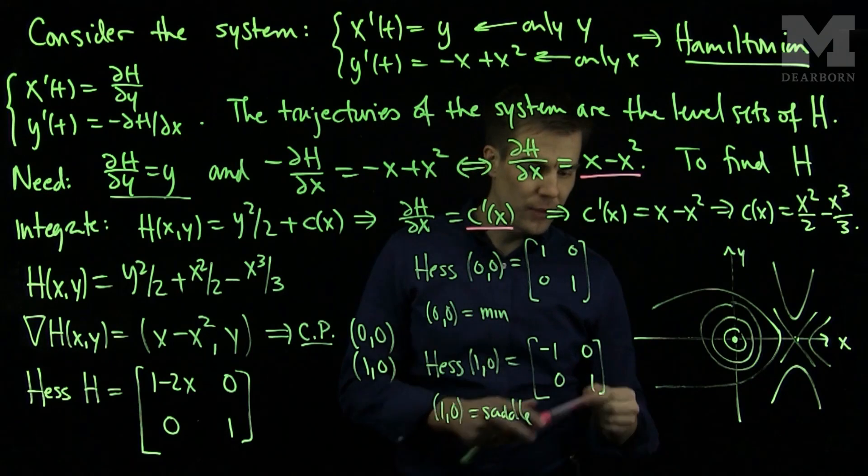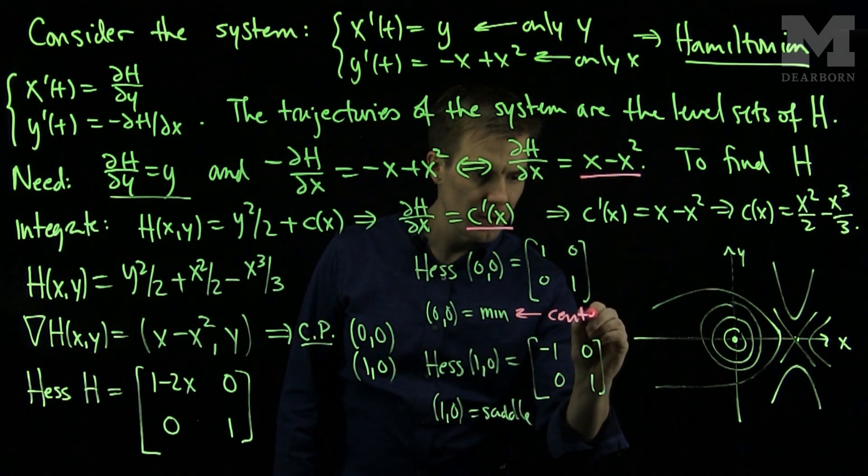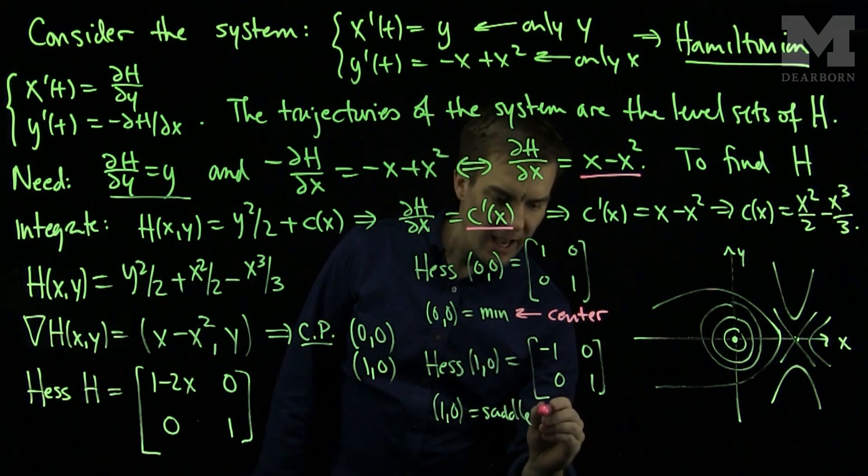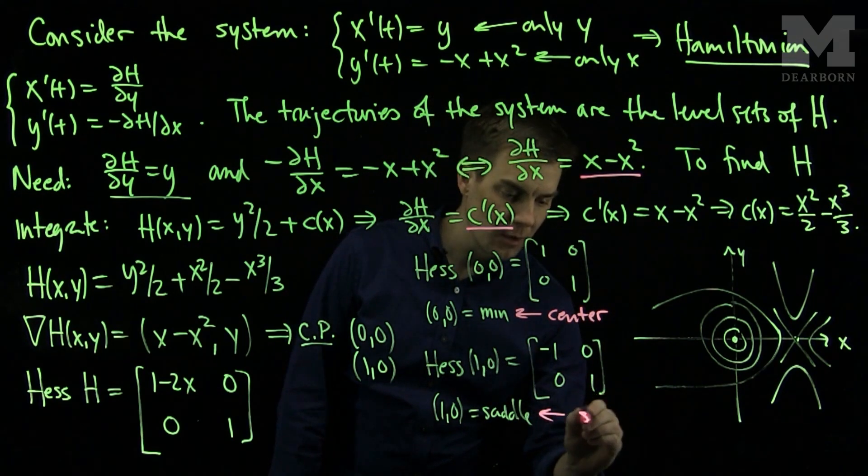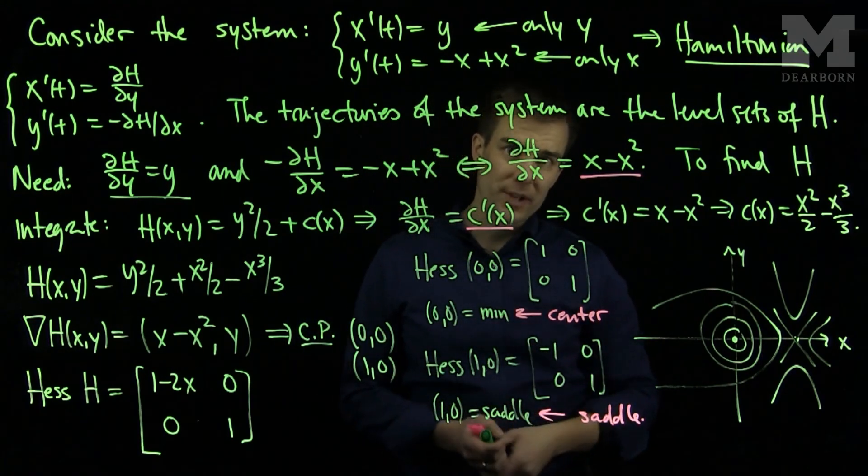So from this, we can conclude that the origin (0,0) is a center of a periodic orbit. And we can conclude that (1,0) is a saddle. So the saddle case stays the same, and the minimum case corresponds to a center.